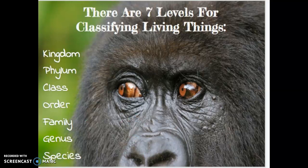There are seven levels for classifying living things: kingdom, phylum, class, order, family, genus, and species.